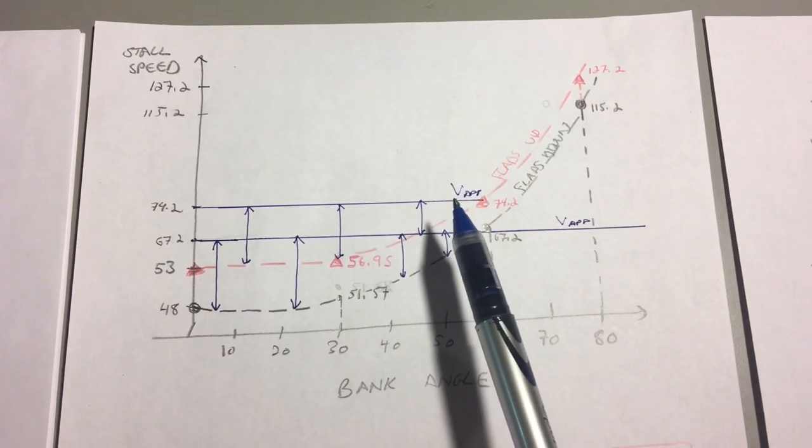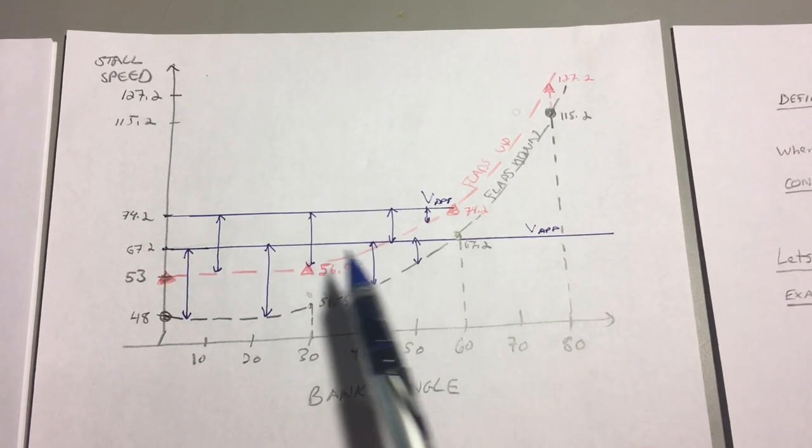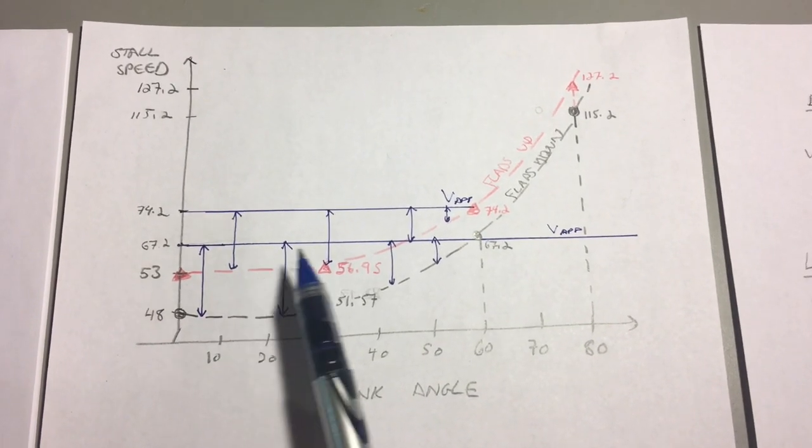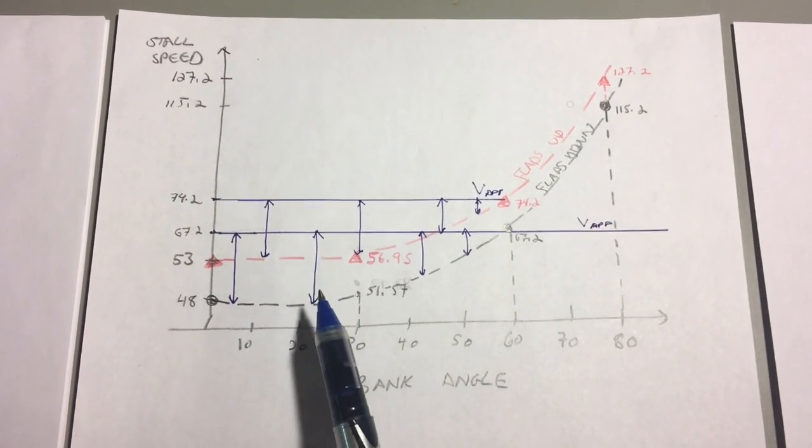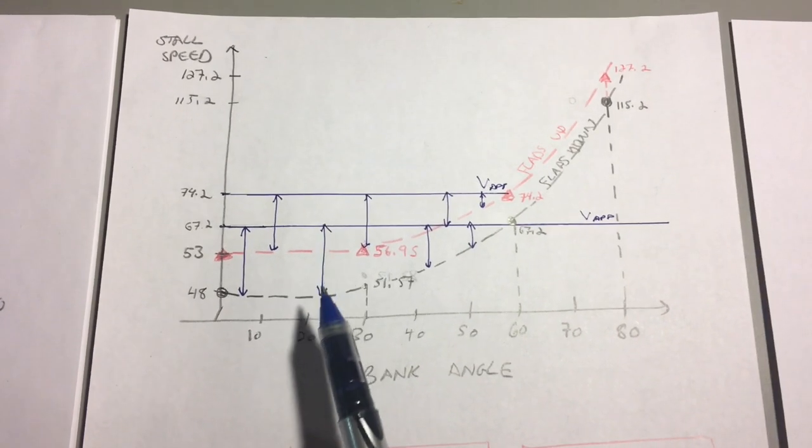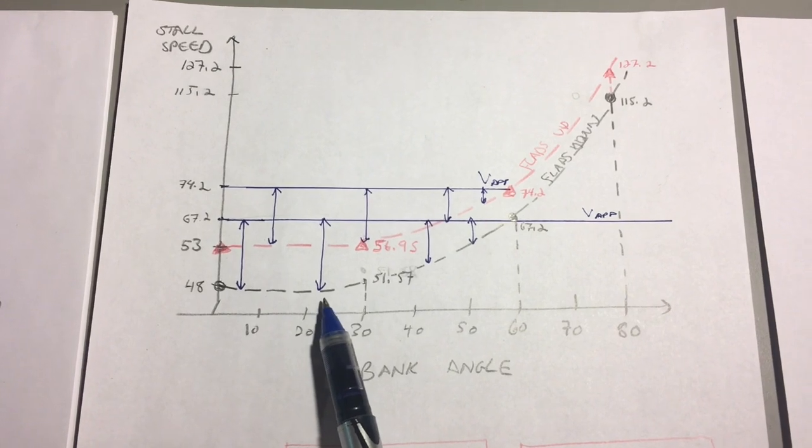I've drawn two horizontal blue lines on our graph that represents the approach speeds that we calculated earlier as 1.4 times V stall, and we can see that the difference in height between this blue line and the black curved line is our stall margin. It's how many knots we could get slow from the approach speed until we stall the airplane.